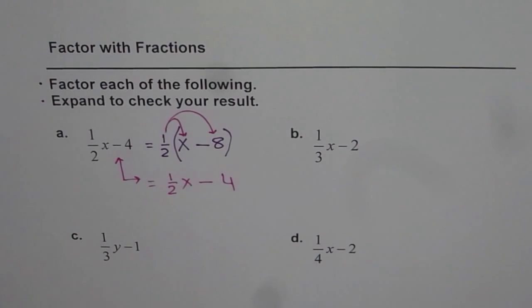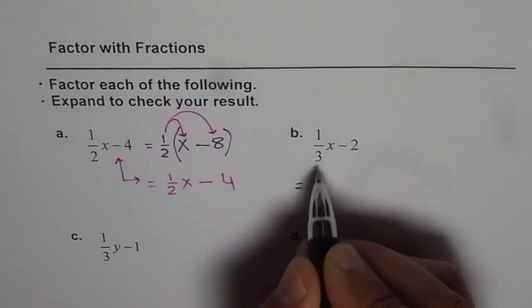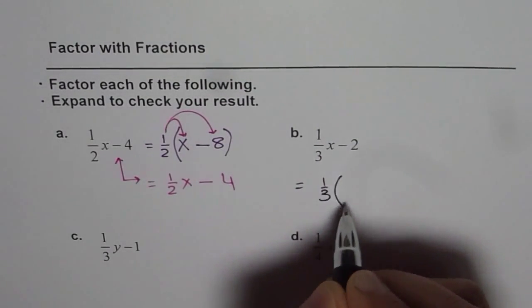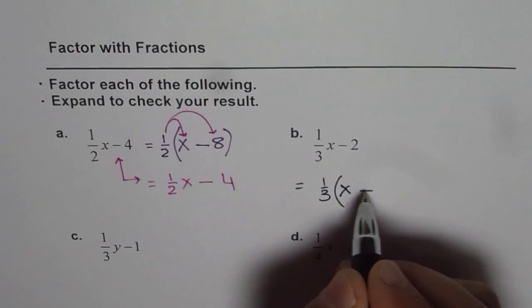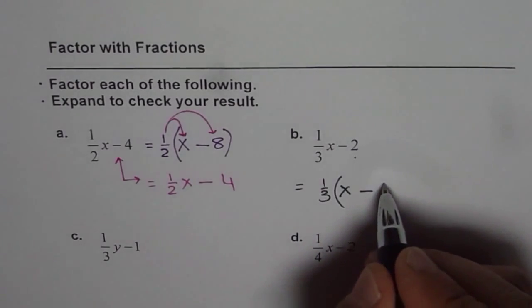Let us continue. Now the next one for us is (1/3)x minus 2. So in this case, I can factor 1/3. So I am left with just x here. What do I get in this position? It should be minus 2 times 3, which is minus 6.